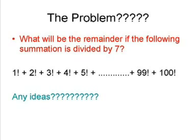Let's look at the problem: What will be the remainder if the following summation is divided by 7? That is 1! + 2! + 3! + 4! + 5! + 6! up to 99! + 100!. Sum all these numbers and you get a big number, and if that number is divided by 7, what will be the remainder? Any ideas?